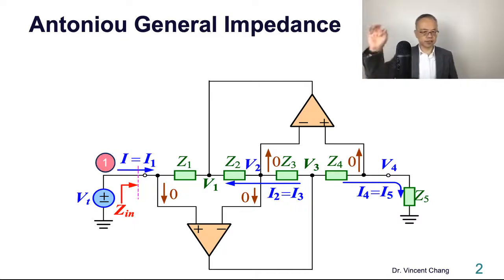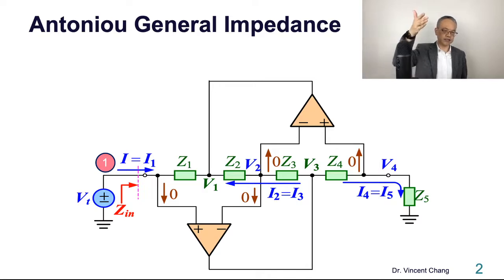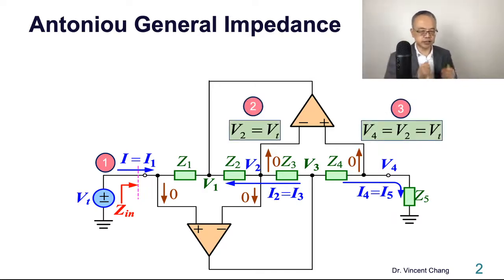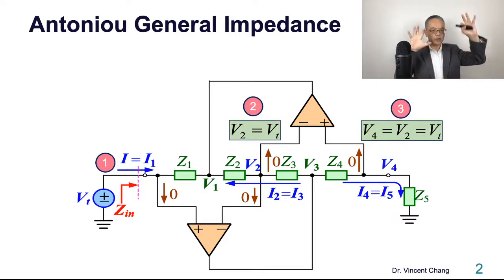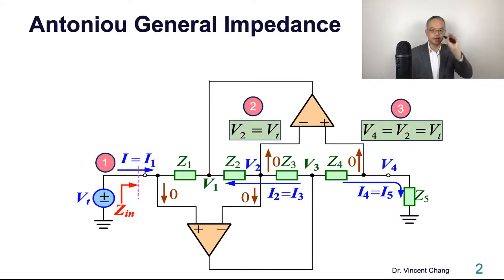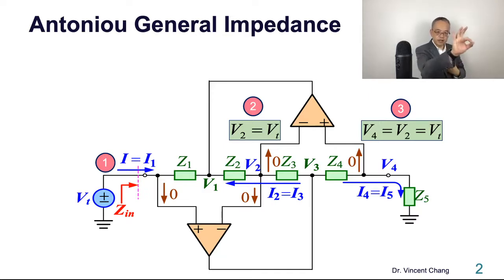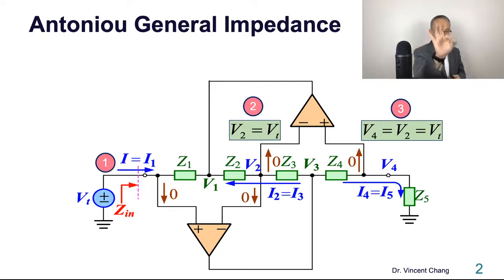Step one: we apply voltage VT and test the current I. Steps two and three use the virtual short of the two op-amps. The virtual short of the first op-amp tells us V2 equals VT. The virtual short of the second op-amp tells us V4 equals V2. Therefore, V4 equals V2 equals VT.